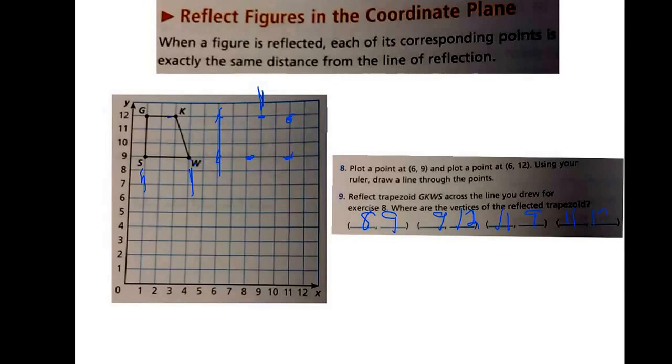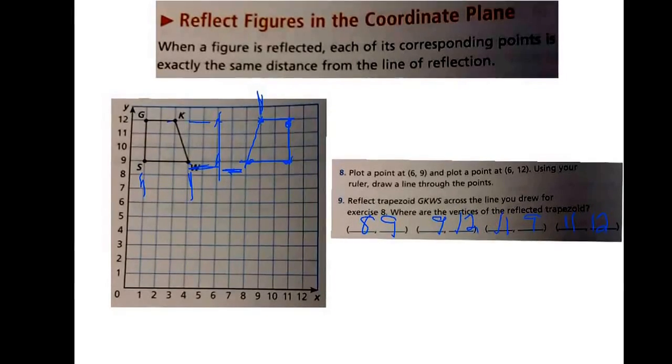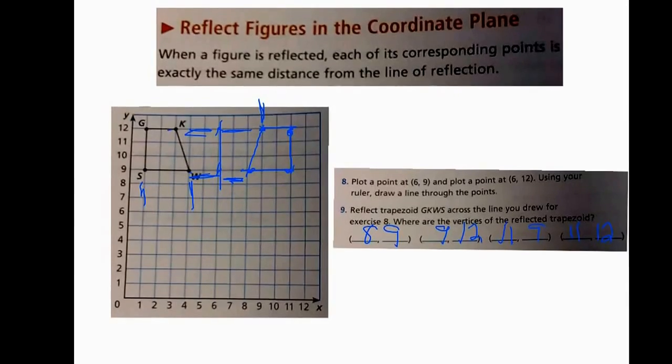Okay, now you can see that I connected my lines, and I have created a right trapezoid that is congruent to my original trapezoid, and it's flipped across the line, and again, notice my spacing here from the line to the trapezoid is equal on both sides.